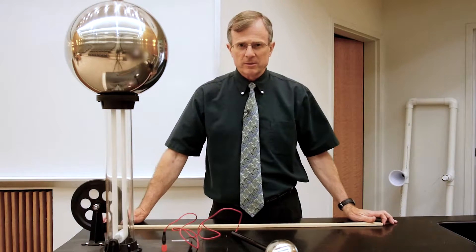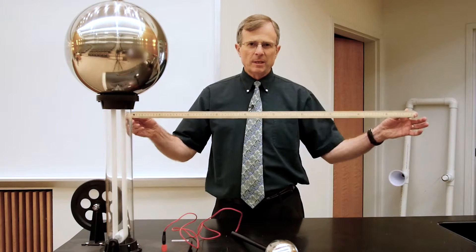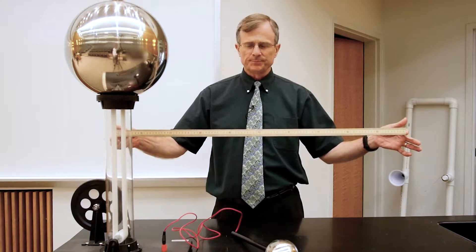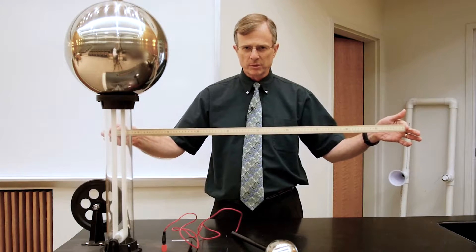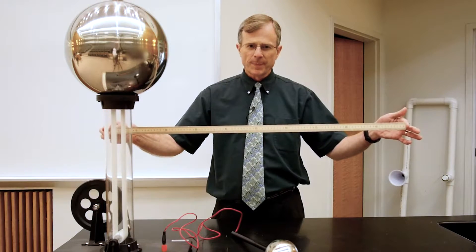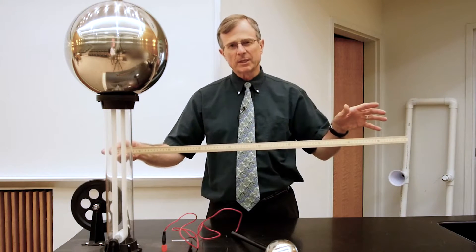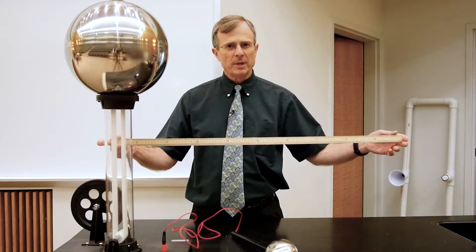The dielectric strength, so called, of air is 3 million volts per meter. So this is a meter stick. And if we have a voltage difference of 3 million volts across this meter, then we can cause dielectric breakdown of the air. We can strip the electrons off the atoms and get an electrically conducting path through the air.